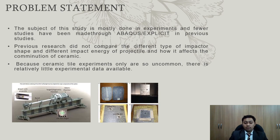For the problem statement, the subject of this study is mostly done in experiments and fewer studies have been made through Abaqus Explicit in previous studies. As shown in the diagram, a gas gun system is what researchers use to study the fragmentation of ceramic during ballistic impact. Previous research did not compare different types of impactor shapes and different impact energies of projectiles and how they affect the comminution of ceramic. Because ceramic tile experiments are uncommon, there is relatively little experimental data available based on the numerical approach.